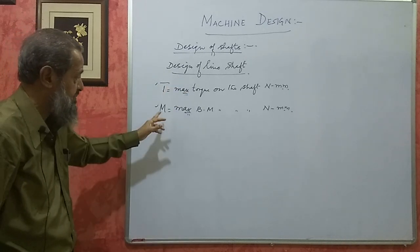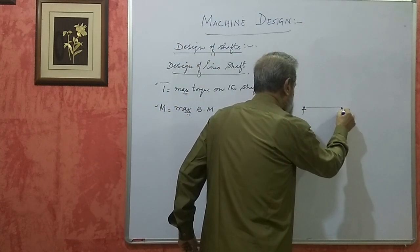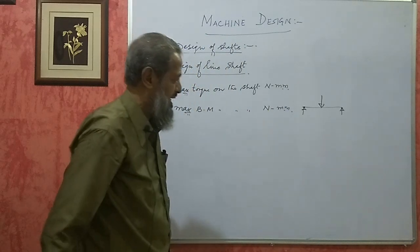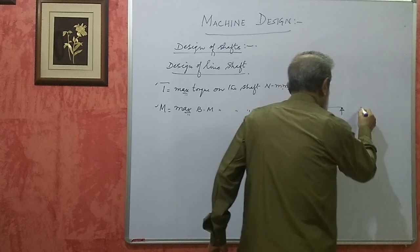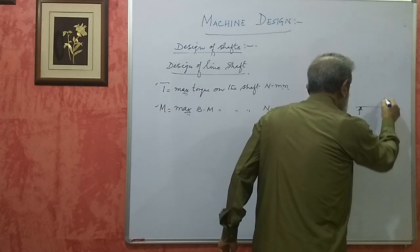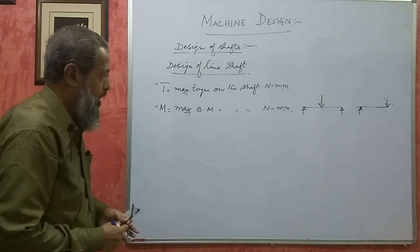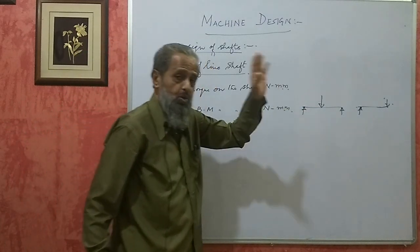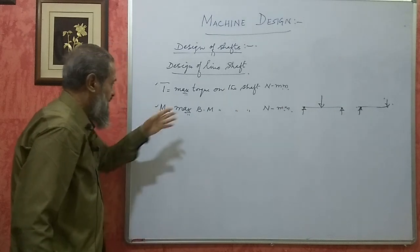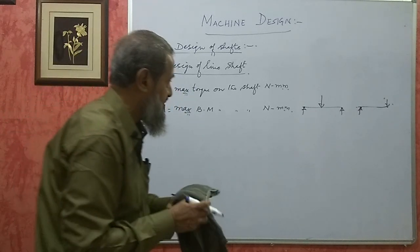We have already done it in the case of machine shaft. The shaft may be supported in two bearings with one or two loads acting — two pulleys, belts, something will be there. It may be a simply supported beam subjected to one or two loads, or it may be a cantilever beam subjected to a point load at the free end. In strength of materials we have done these problems — how to find out the maximum bending moment. If you know the span, load length and all that, you can get the value of M.